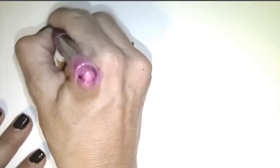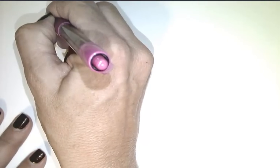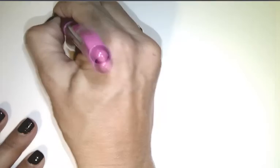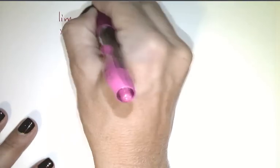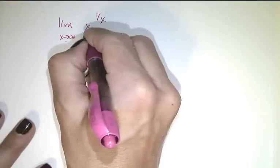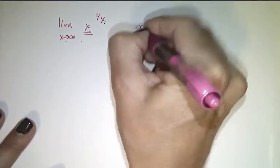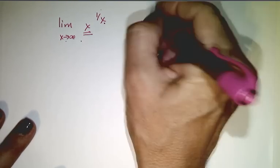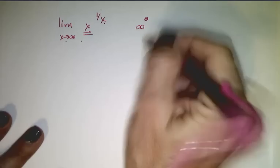The first one is going to be the limit as x goes to infinity of x to the 1 over x. As x goes to infinity, x goes to infinity, and 1 over x as x gets big goes towards 0. So this is an infinity to the 0 type, which is an indeterminate power, which means we're ready to proceed.